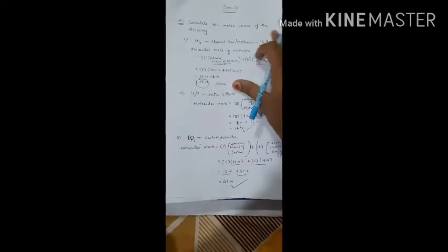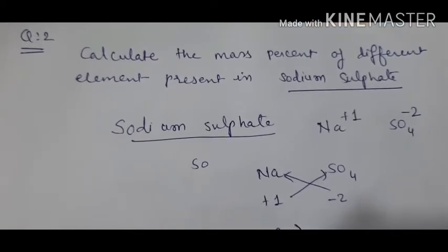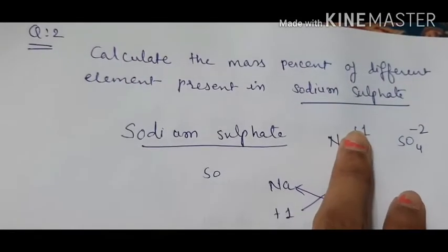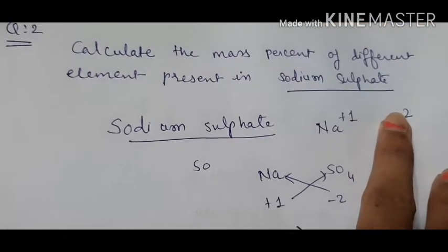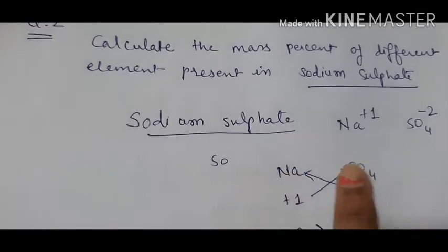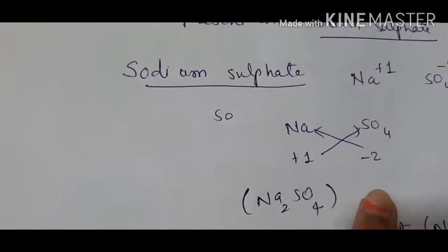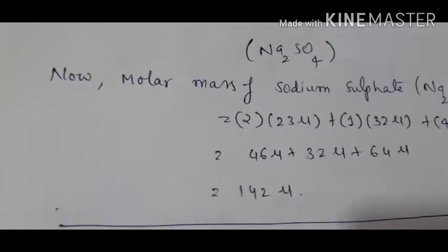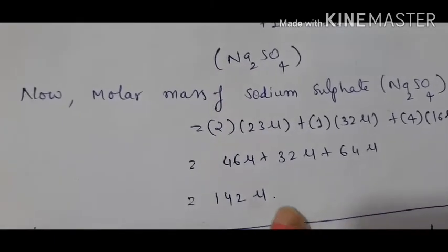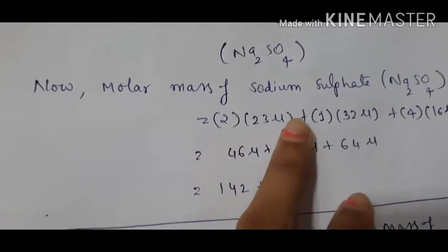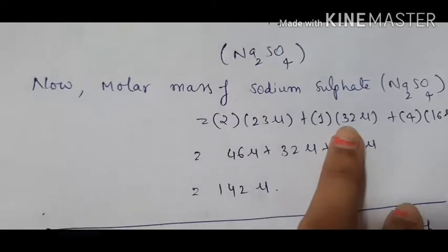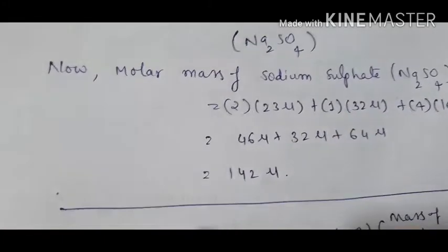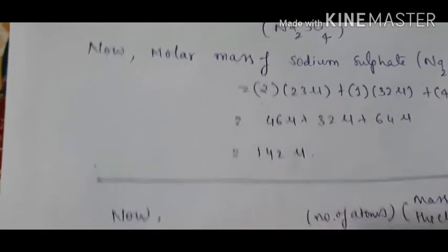Now we are moving to question number two, which is related to mass percentage. We have to find the mass percentage for sodium sulfate. Sodium sulfate: sodium symbol Na with valency +1, and sulfate ion SO4 with valency -2. Cross-multiplying the valencies, the formula is Na2SO4. The molar mass calculation: 2 into 23 (sodium) plus 1 into 32 (sulfur) plus 4 into 16 (oxygen) equals 46 plus 32 plus 64 equals 142 unified mass.